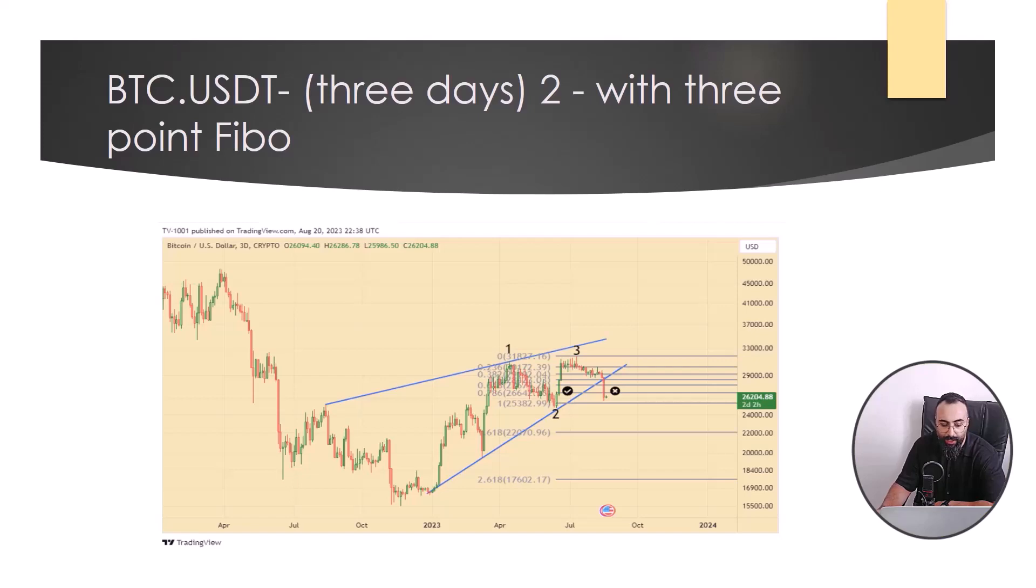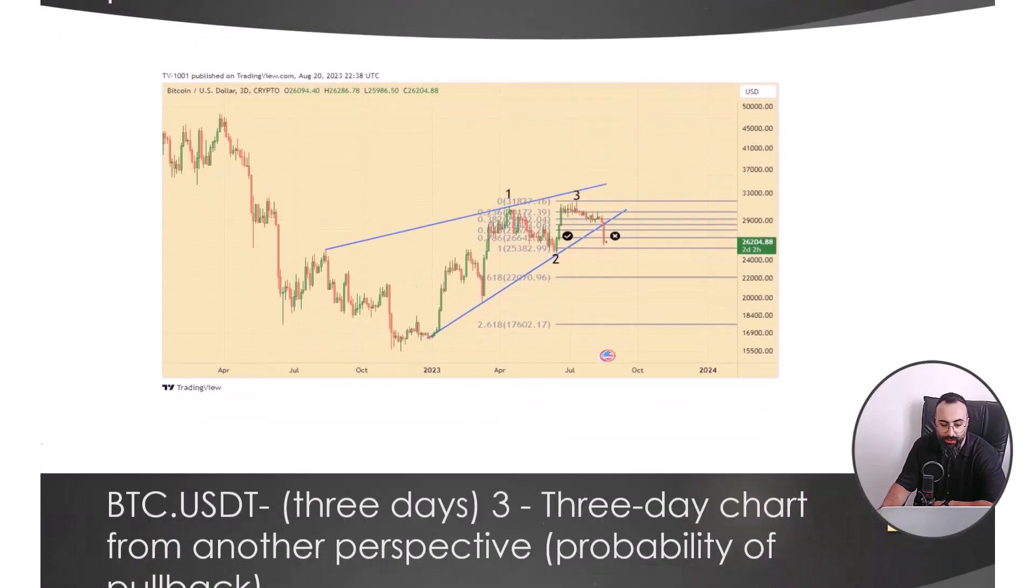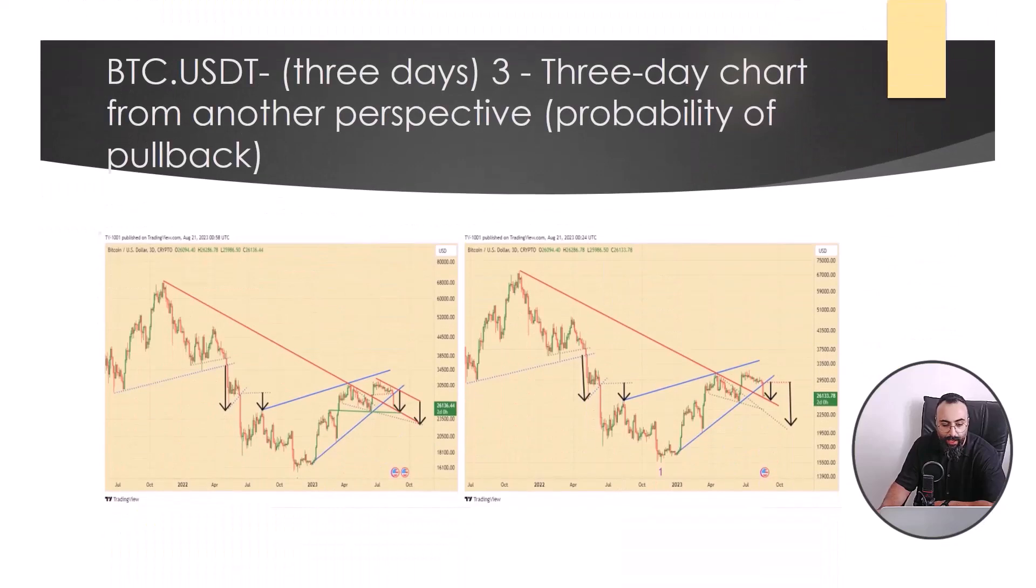And in the three-day chart, from another perspective, after the pullback to the red trend line, which used to be resistance as it was broken and now has a supporting role. If this support is broken, and we also consider the blue corner, because the price entered the blue corner from above, it usually exists from the bottom of this corner. And how much price reduction below the corner depends on the way and the amount that price entered the corner from above.